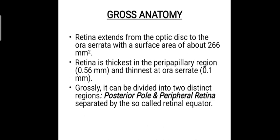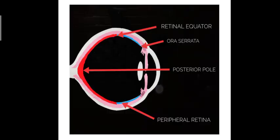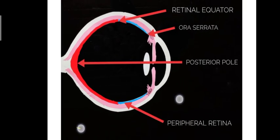Grossly, the retina has been divided into two parts: the posterior pole and the peripheral retina. They are separated by the retinal equator. It is very easy to remember — the retina is divided by the retinal equator into these two parts, as shown in the representation here.